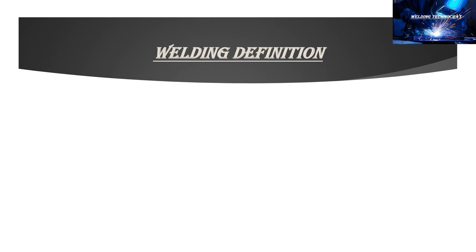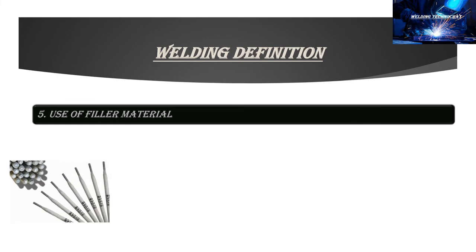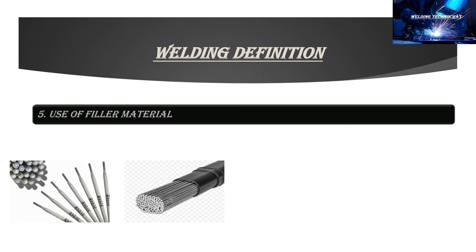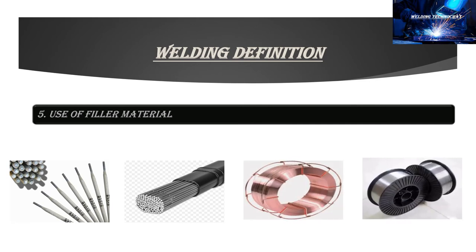The fifth component in the definition of welding is the use of filler wire. The addition of filler wire is in the form of electrodes in SMAW, bare welding rods in GTAW, spools in SAW, flux-cored wire in FCAW, or metal wire spools in GMAW.